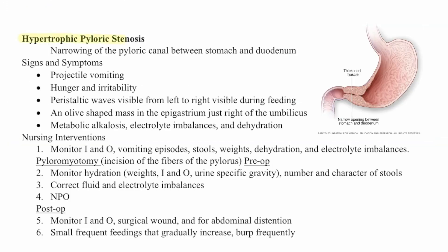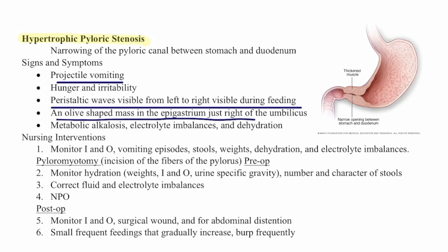Then we have hypertrophic pyloric stenosis, which is a narrowing of the pyloric canal between the stomach and duodenum. Signs and symptoms include projectile vomiting, hunger, irritability, and peristaltic waves visible from left to right during feedings. Key signs are an olive-shaped mass in the epigastrum just right of the umbilicus, metabolic alkalosis, electrolyte imbalance, and dehydration.